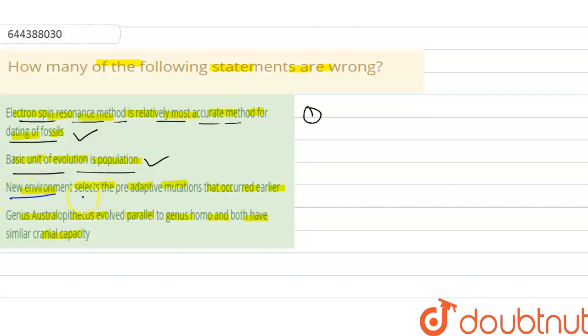Third statement: new environment selects the pre-adapted mutations that occurred earlier. That is also right because we know that mutations are affected by the environment. If there is a new environment, the mutations will be changed and they are adapted due to the pre-adapted mutations.